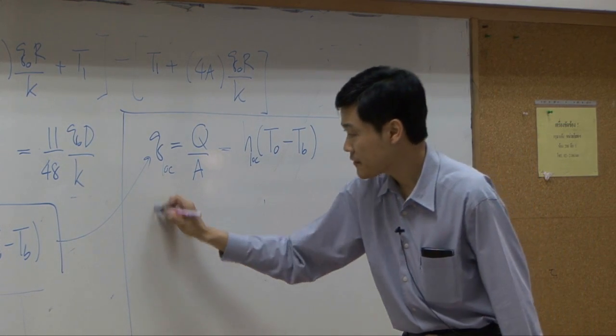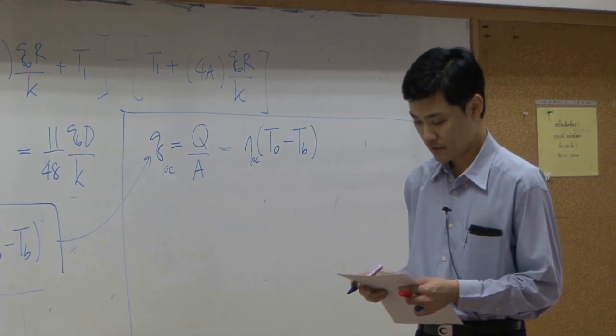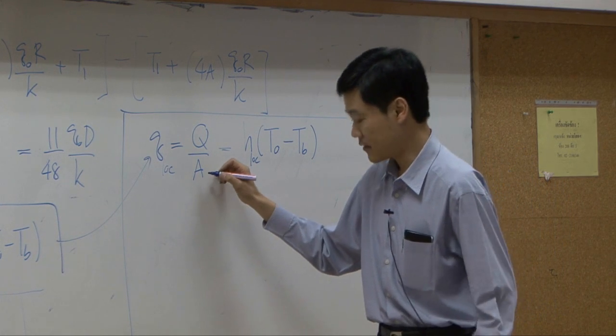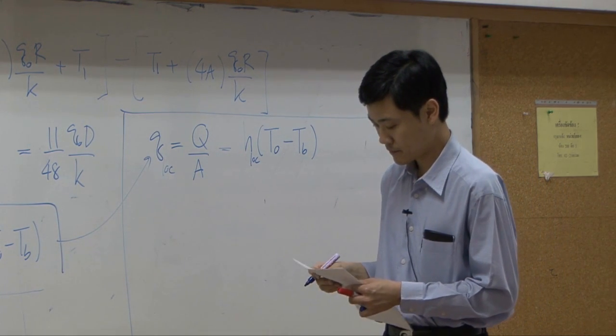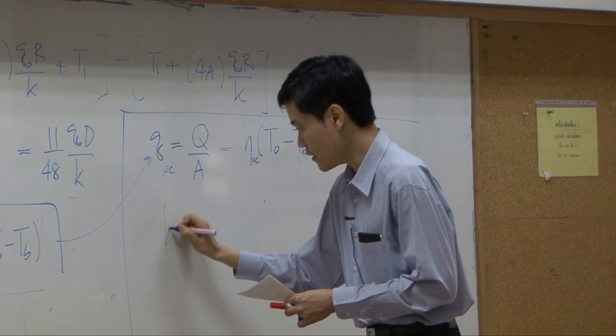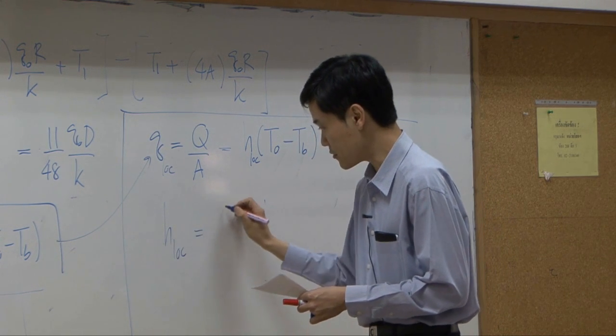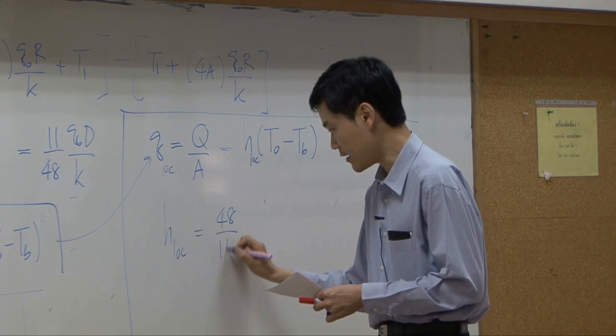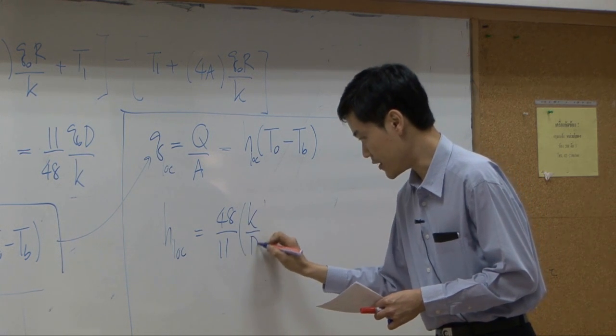Then you can get heat transfer coefficient local supposed to be equal to 48 over 11, K over D.